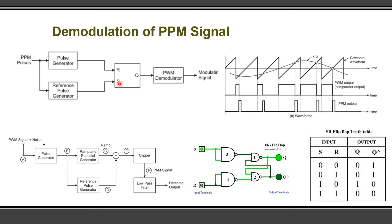When the PPM signal is applied, whenever the R terminal is one, the output Q is zero. When S is one, the output Q is one. The SR flip-flop is constructed using NAND gates. The truth table is also represented here. Using the reference pulse generator and pulse generator, we are able to generate a pulse width modulated signal. The Q output of the SR flip-flop is the pulse width modulated signal, which is then applied to the PWM demodulator.